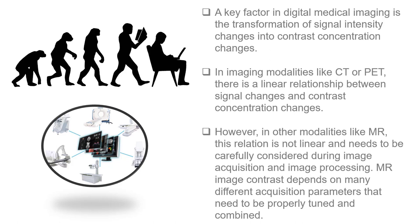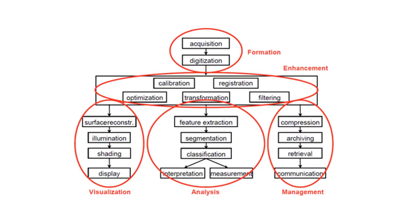A key factor in digital medical imaging is the transformation of signal intensity changes into contrast concentration changes. Each modality is unique. In imaging modalities like CT or PET imaging, there is a linear relationship between the signal changes and the contrast changes. However, in other modalities like MR, this relationship is not linear and needs to be carefully considered during acquisition.